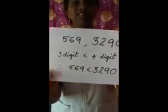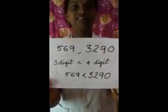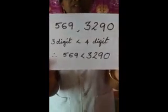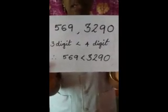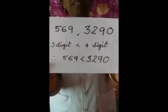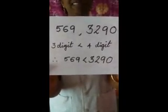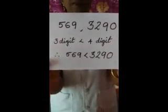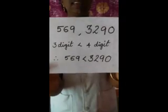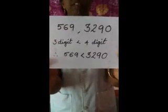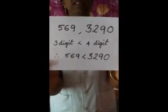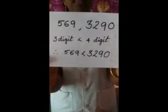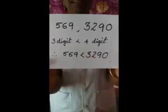See children here. The first one is a three-digit number. The second one is a four-digit number. I said a number with more digits is always greater. So we can say that the three-digit number is lesser than the four-digit number. The answer is: five hundred and sixty-nine is lesser than three thousand two hundred and ninety.